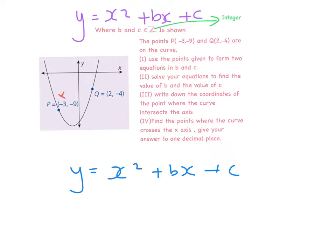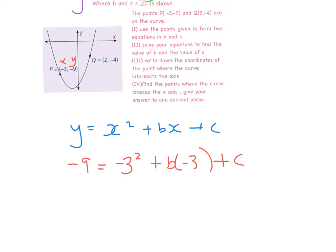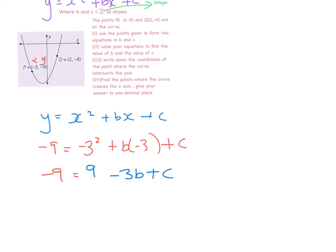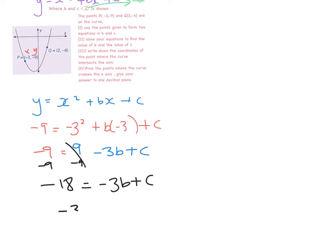I'm going to call -3 my x coordinate and -9 my y coordinate. So I'll say: minus 9 equals (-3) squared plus b times (-3) plus c. Working that out gives me minus 9 equals 9 minus 3b plus c. Moving letters to one side and numbers to the other, I get minus 18 equals minus 3b plus c, which rearranges to minus 3b plus c equals minus 18.